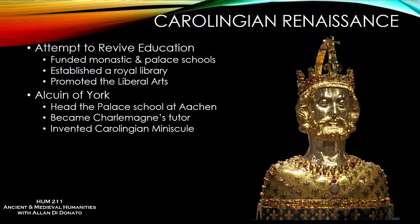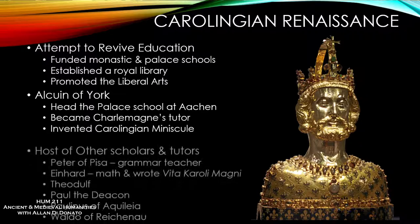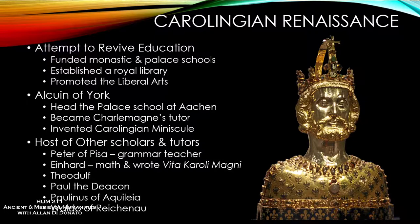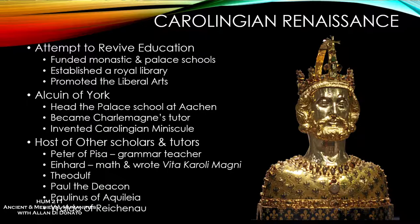There were a host of other scholars Charlemagne brought to the palace. His grammar teacher, Peter of Pisa from northern Italy; Einhard — probably the next most well-known figure after Alcuin of York — who was his tutor in mathematics and also wrote the 'Vita Caroli Magni,' the Life of Charles the Great, from which most of what we know about Charlemagne's reign comes. Others included the Visigothic Theodulf, the Lombard Paul the Deacon, Paulinus of Aquileia, and a number of other names. This was a brain trust centering around Charlemagne.